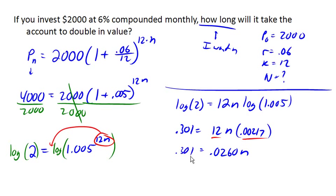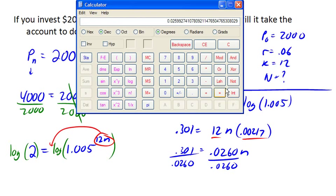And now I can divide by, divide by that. So I've got 0.301 divided by 0.0260 is 11.5577, okay.